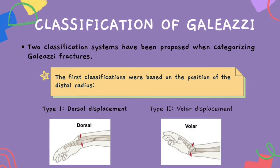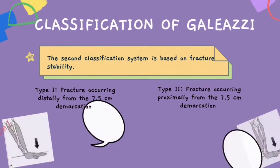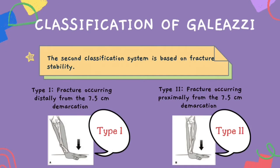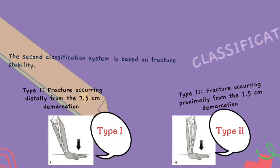There are two classification systems for Galeazzi fractures. The first is based on the position of the distal radius: Type 1 is dorsal displacement and Type 2 is volar displacement. The second classification system by Rettig and Raskin categorizes fractures based on stability: Type 1 fracture occurring distally from the 7.5 cm demarcation, and Type 2 fracture occurring proximally from the 7.5 cm demarcation.